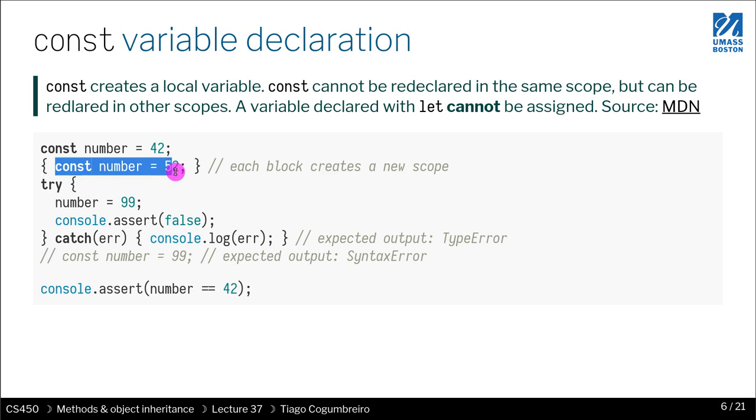But if I'm inside another scope, let's say with a block of code, then I can create a new variable const with the same name. That's fine, because it's within another scope. So it's another variable.